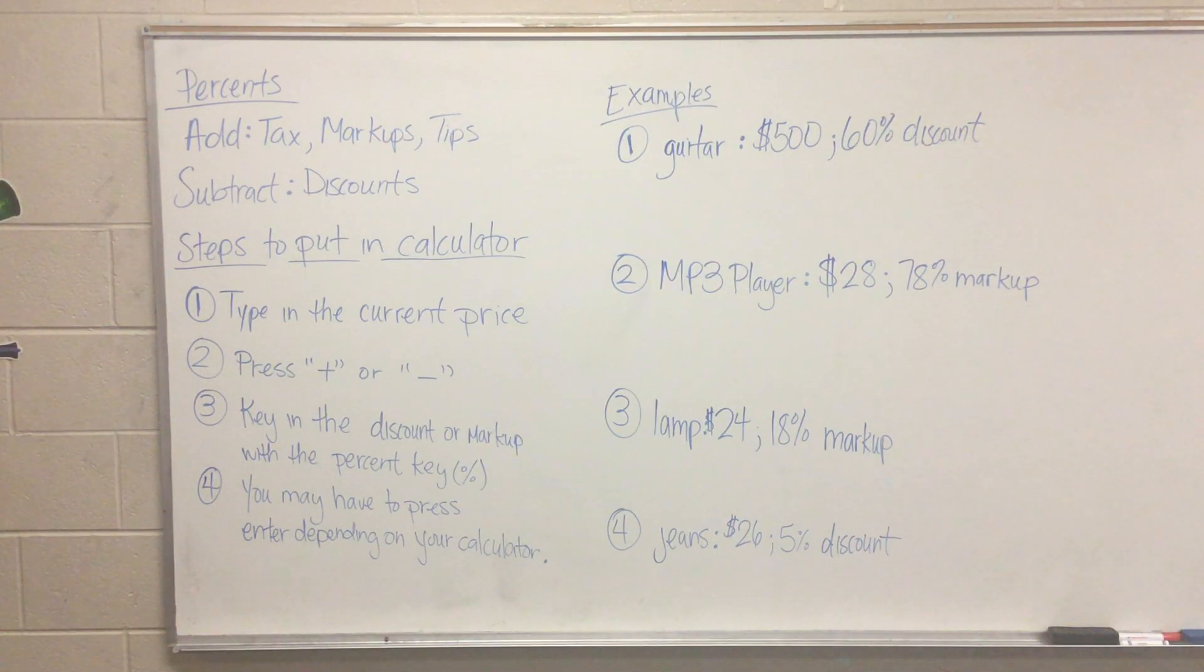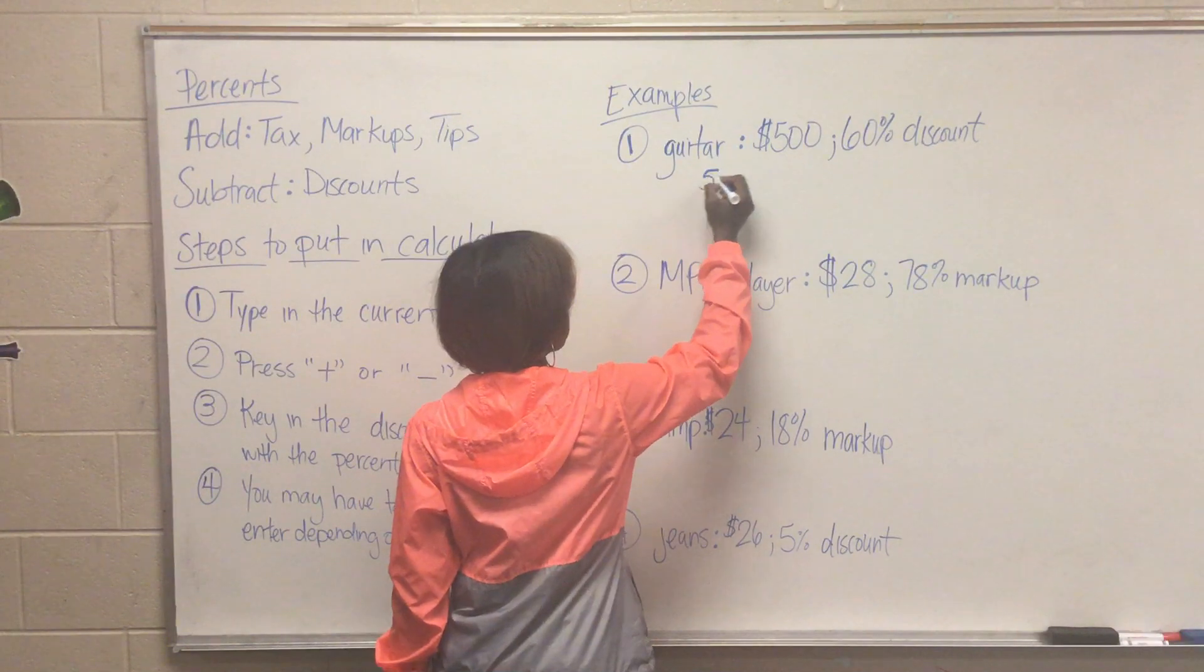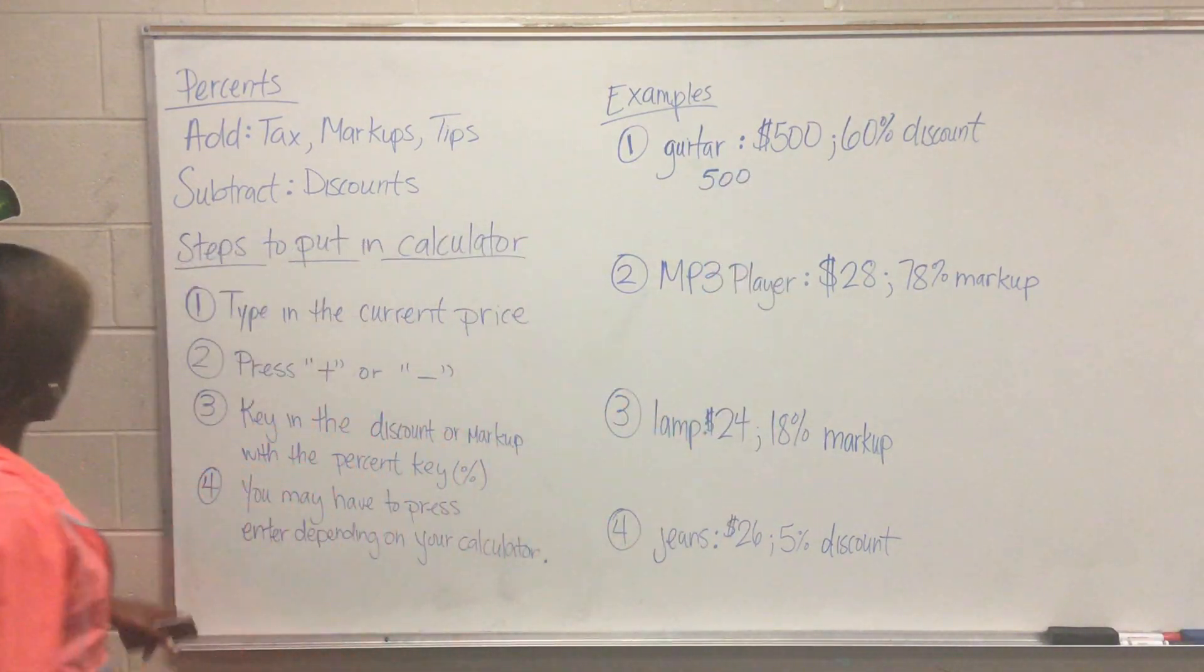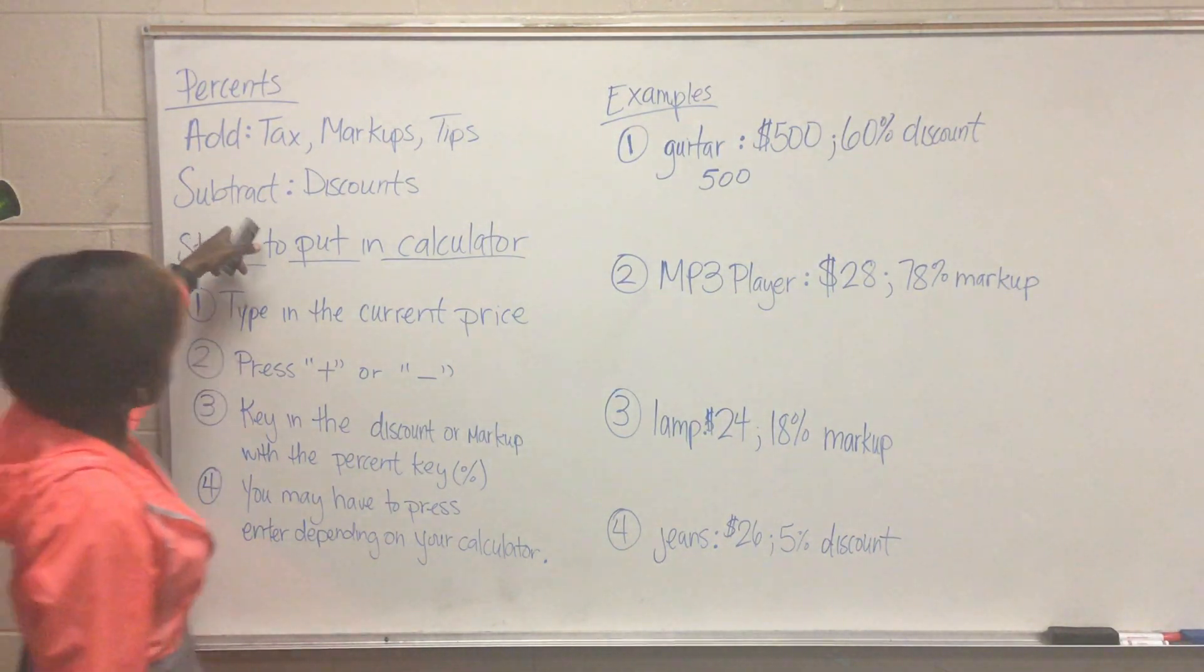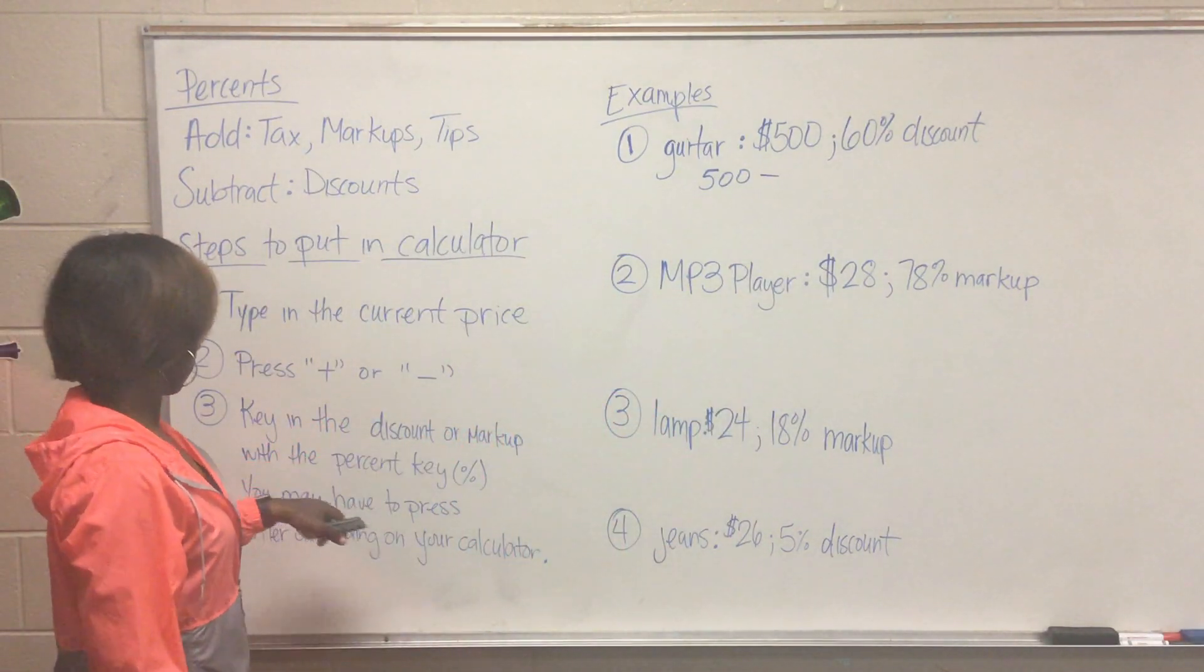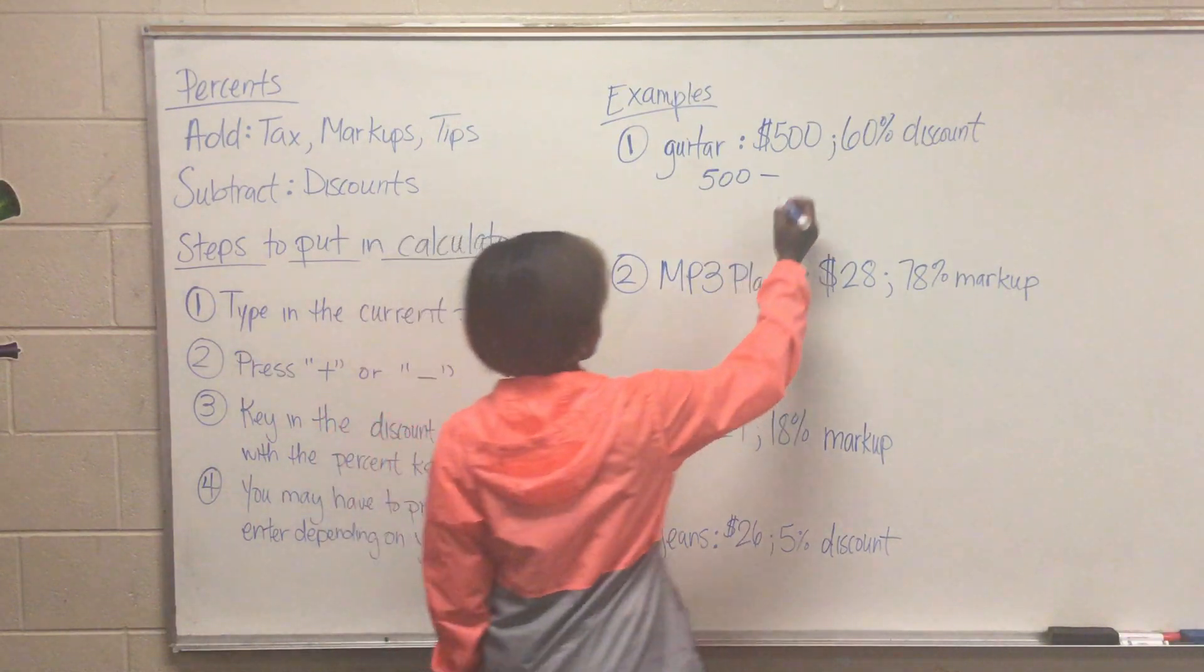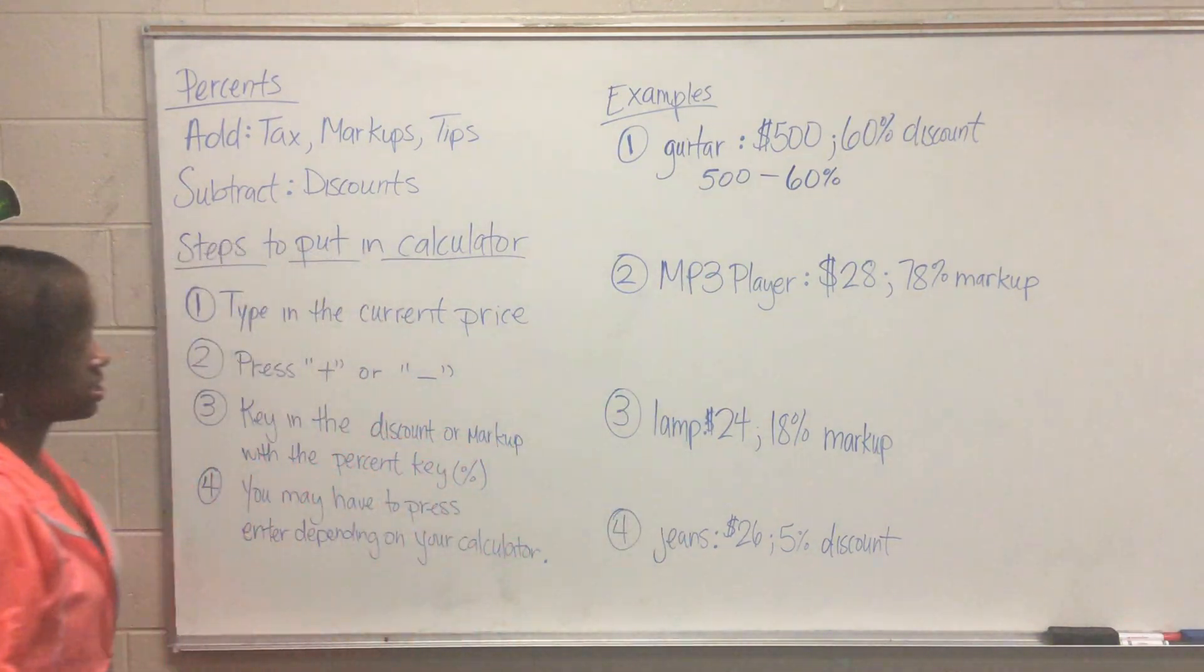So for number one you have a guitar. That guitar originally cost $500 and it is a 60% discount. So the first step is to type the current price, so I want $500. Then I have to add or subtract - because this is a discount I know that I need to subtract. I'm going to subtract the discount with the percent key. So this is the scratch work that I should see on your paper.